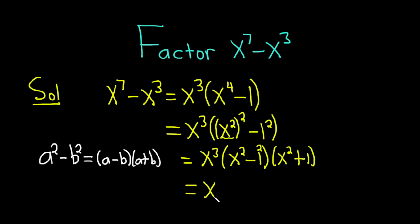This will be x cubed. So it's a minus b, so x minus 1, because a is x and b is 1. And then a plus b, so x plus 1. And we still have the x squared and the plus 1.